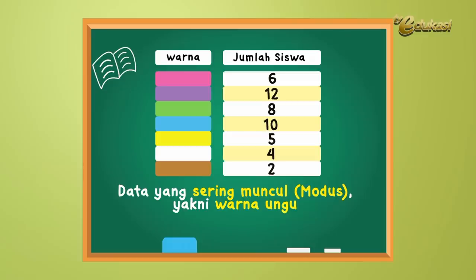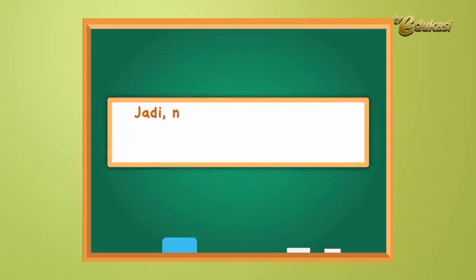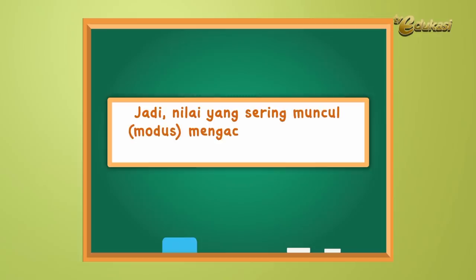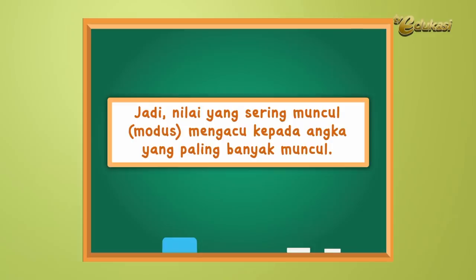Apa hubungan antara warna atau data dan banyaknya siswa atau banyaknya data dengan nilai yang paling sering muncul atau modus? Jadi, nilai yang sering muncul atau modus mengacu pada angka yang paling banyak muncul. Jelas ya, anak-anak, tentang modus? Mudah bukan?